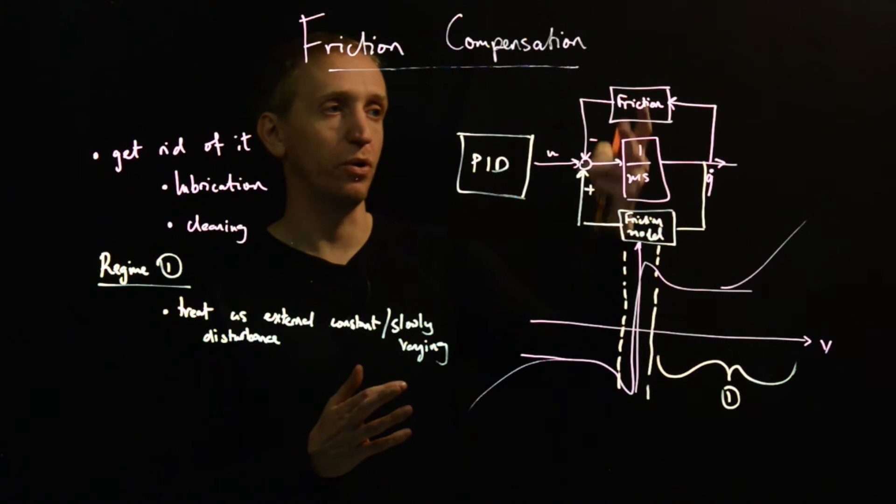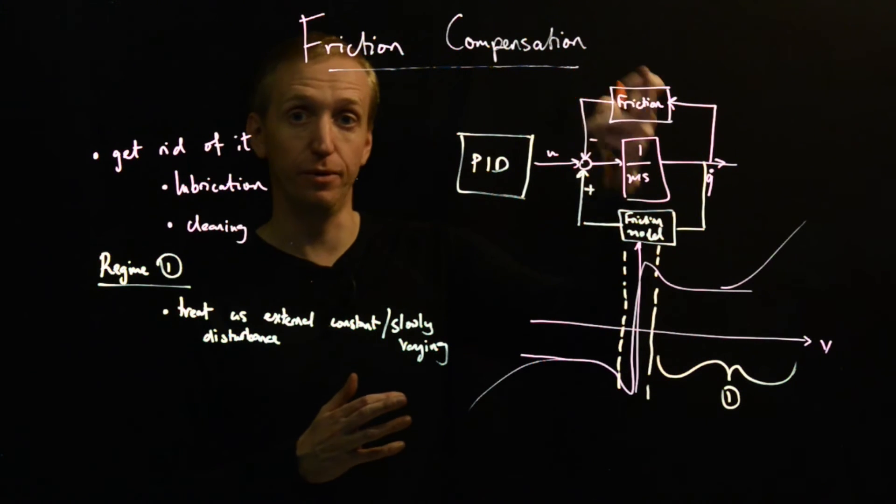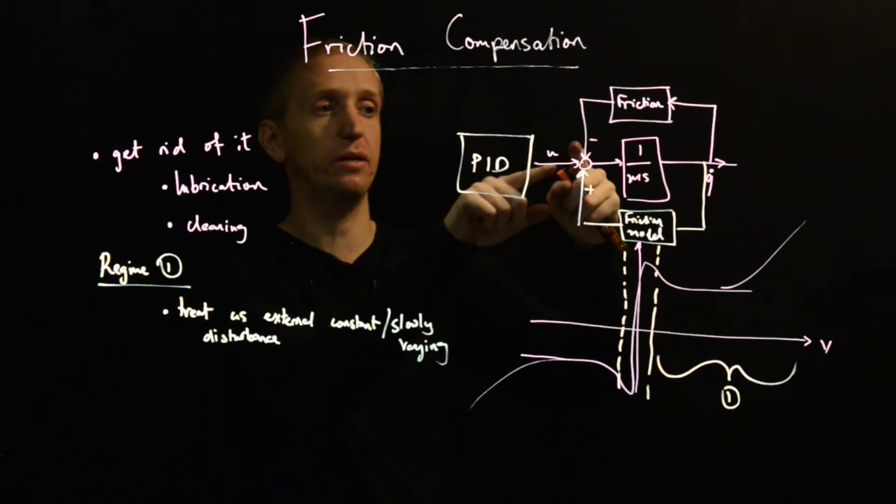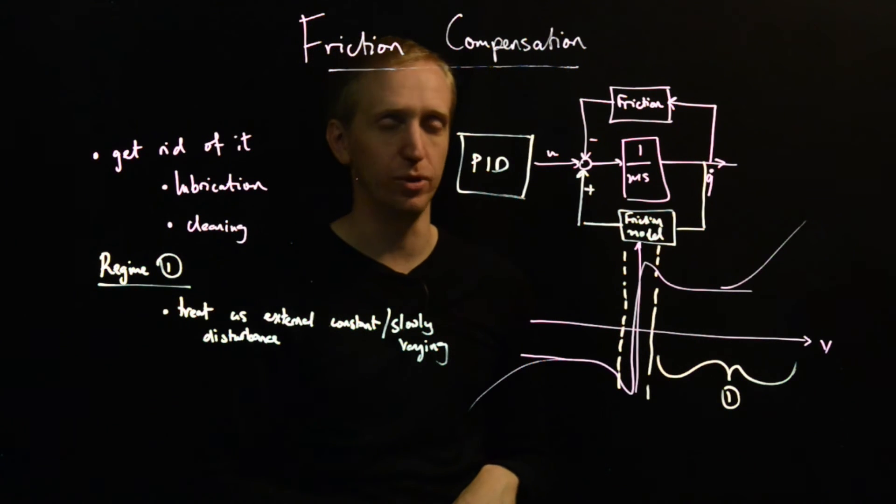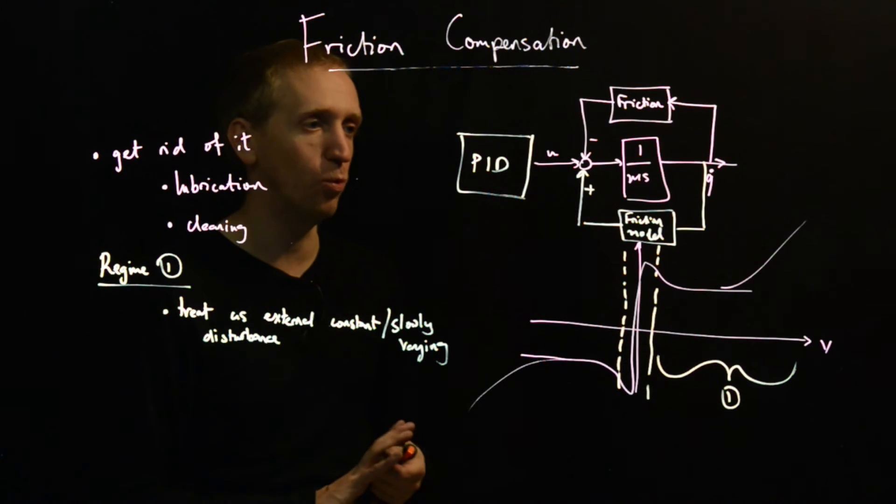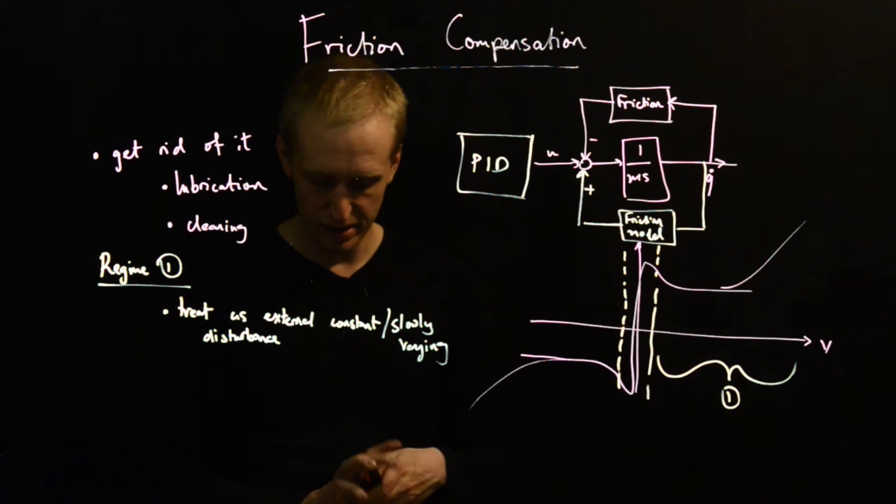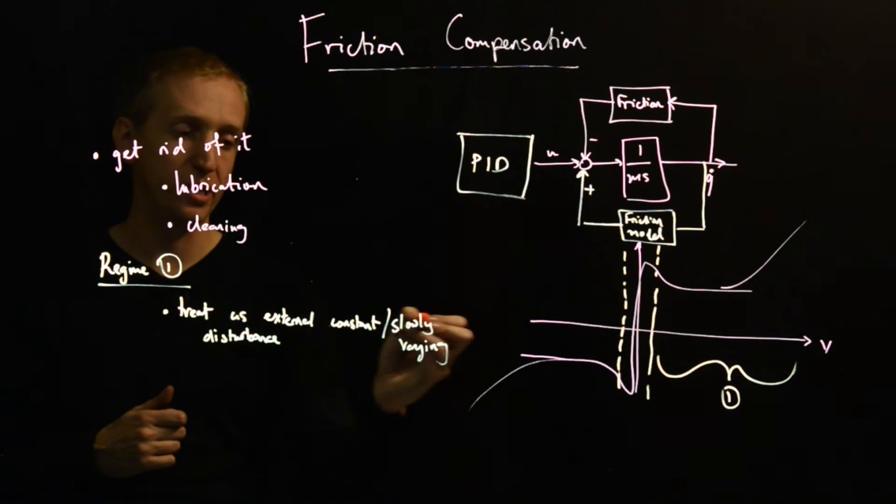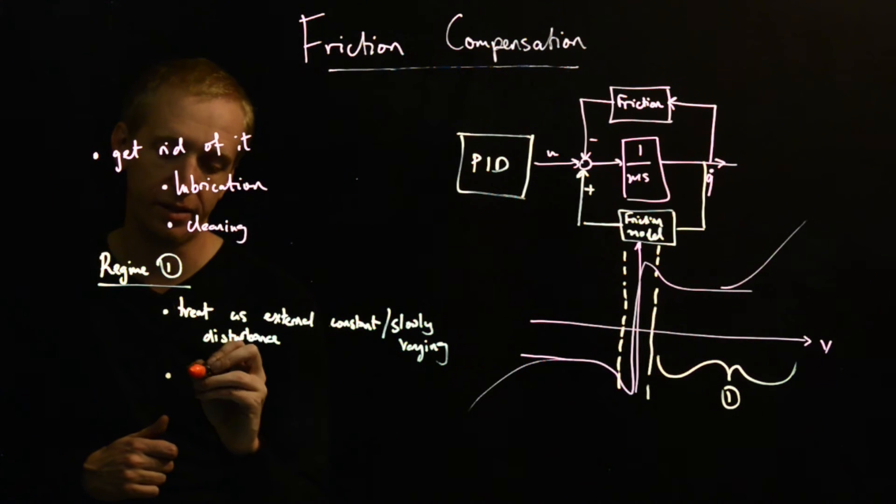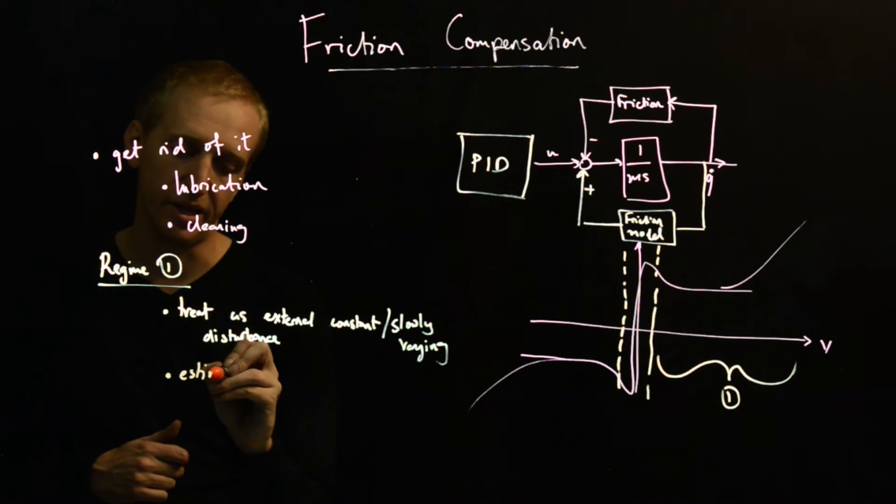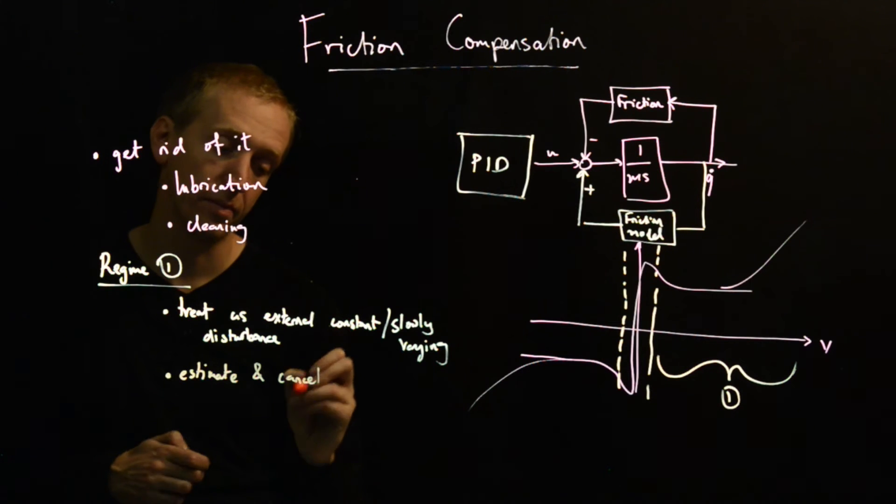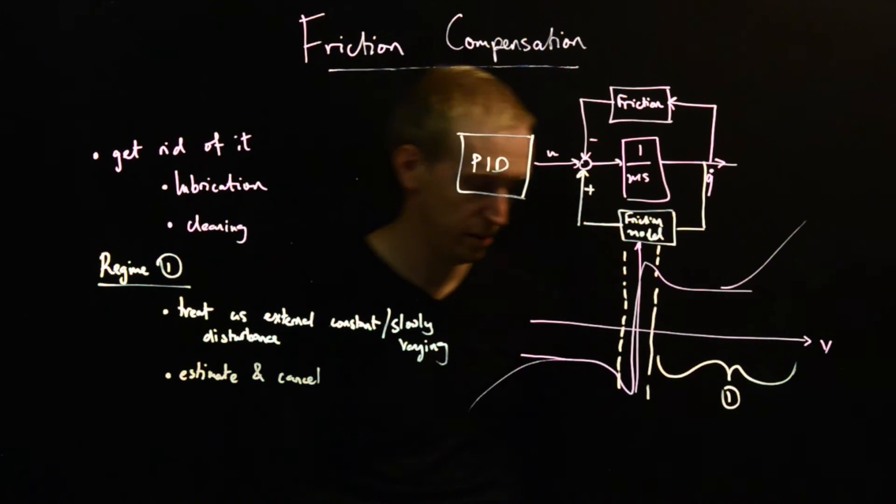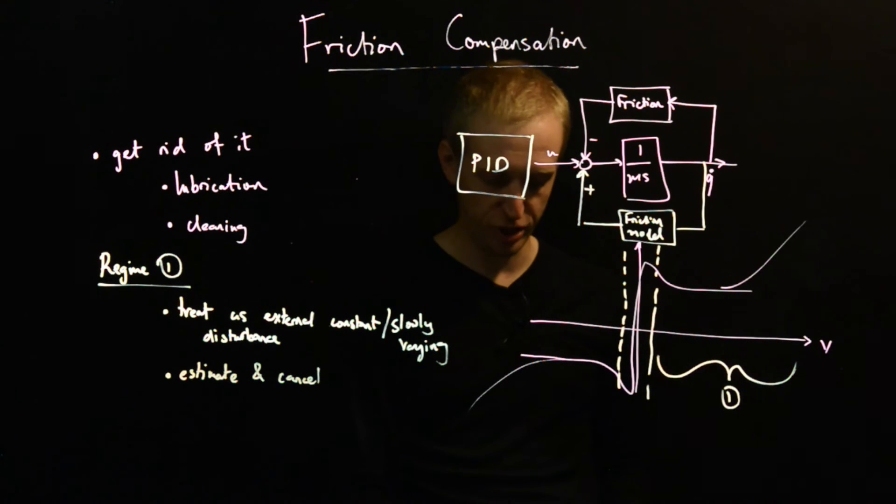But friction modeling is hard, so you need to be quite careful when you start using this kind of technique. Because if your model here isn't a very good match for what's actually going on with friction, maybe by adding this signal in, you'll just make things worse or make your system behave in wild and unpredictable ways. We can treat it as an external disturbance or we can estimate and cancel.